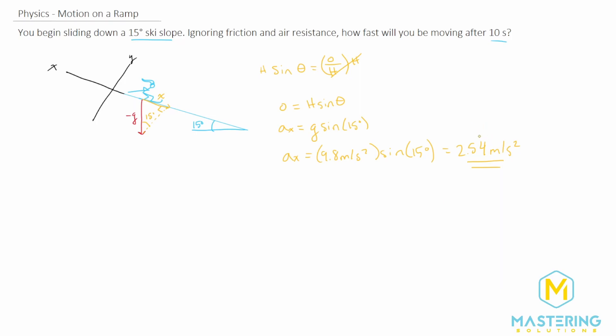So now we need to take that information and plug it in and say, how fast are we going after 10 seconds? We'll use kinematic equations. The one we'll use is the acceleration formula. So we have v final is equal to v initial plus acceleration times time.